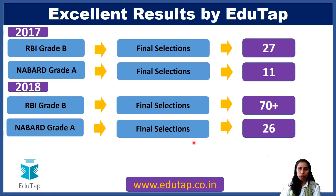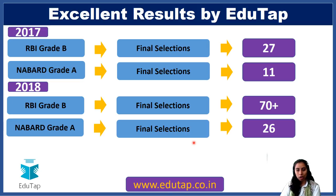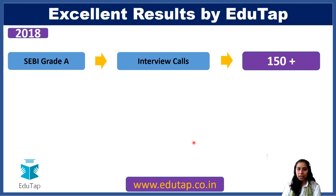Let me tell you about our previous results. We have been working in this field for quite some time now and have some brilliant results. You can see 27 selections in RBI Grade B of 2017 and 11 selections in NABARD Grade A. For 2018 RBI Grade B, results were announced recently and 70 plus of our students have been selected. In NABARD Grade A, 26 selections were made, and for SEBI Grade A of 2018, more than 150 of our students have gone through the interview phase.